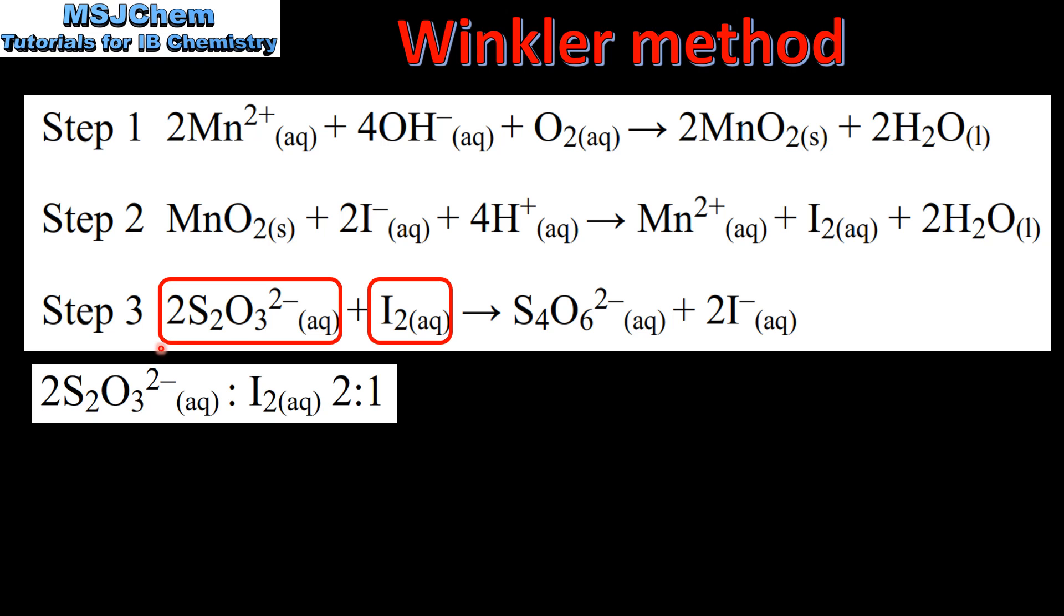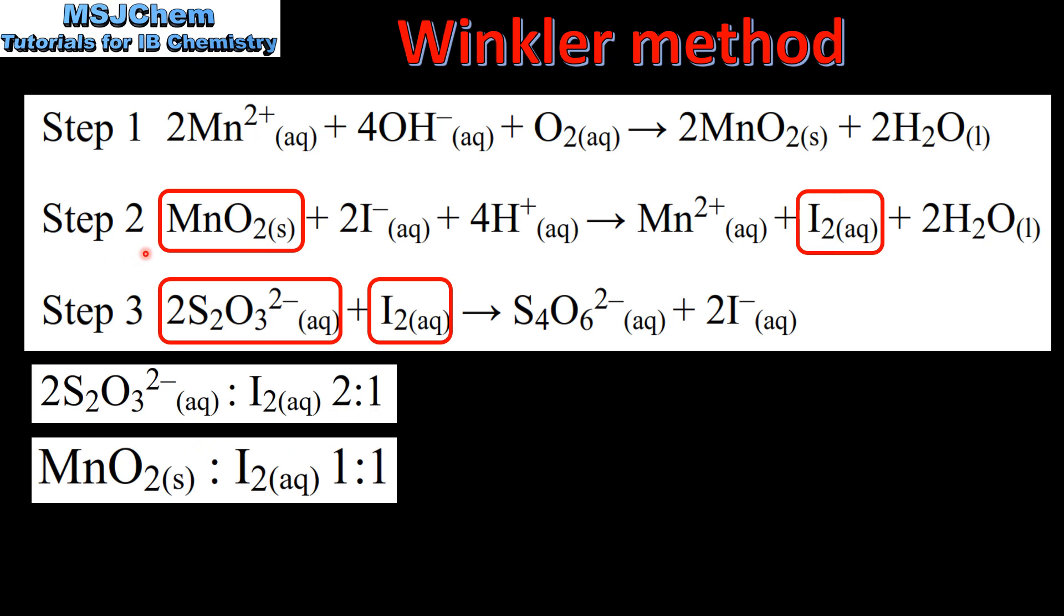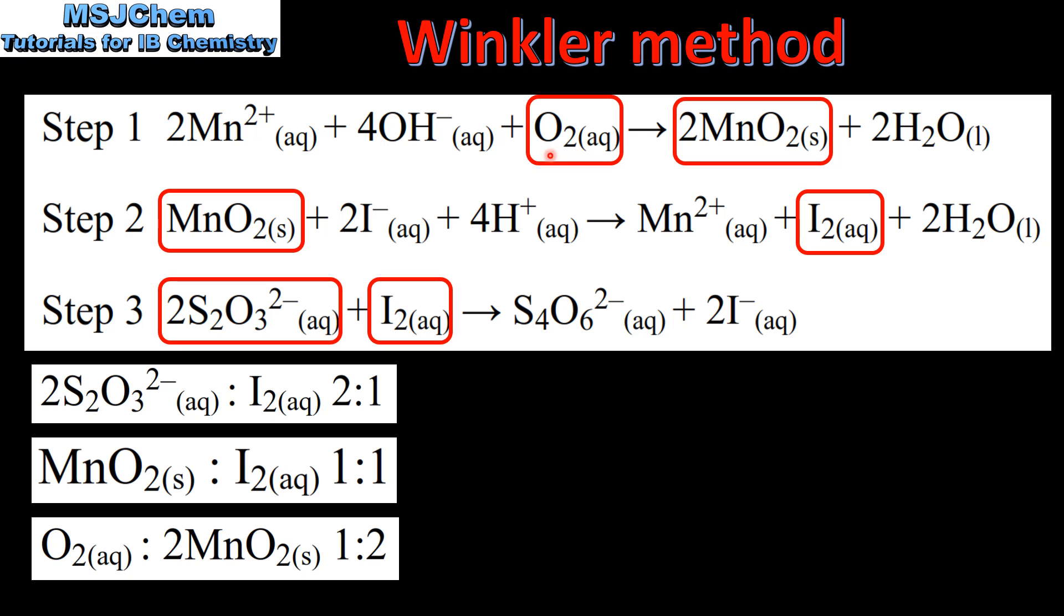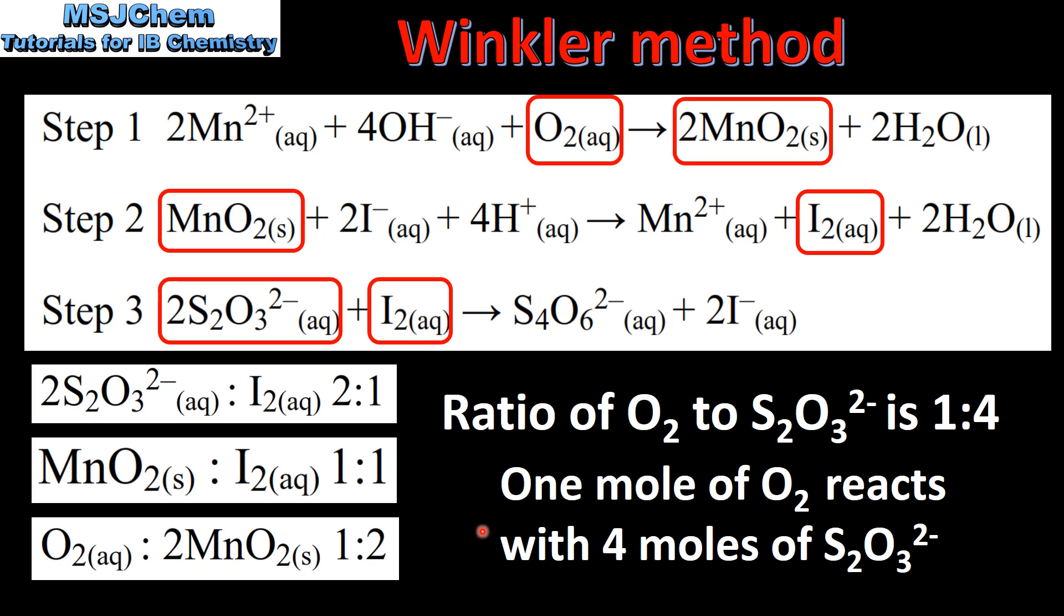By looking at the coefficients we can see that the thiosulfate ions and the iodine react in a 2 to 1 ratio. In step 2, the MnO2 and the I2 react in a 1 to 1 ratio. And in step 1, the O2 and the MnO2 react in a 1 to 2 ratio. So from this we can see that the ratio of oxygen O2 to thiosulfate ions is 1 to 4. That means that 1 mole of oxygen reacts with 4 moles of thiosulfate ions.